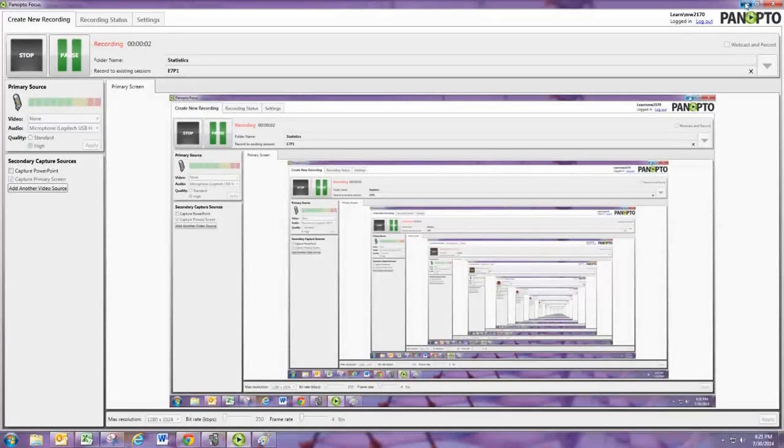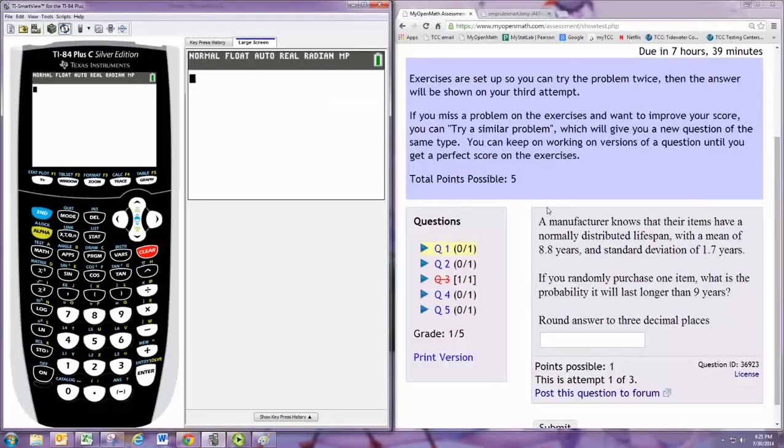In this video, we'll see how to do practice problem 1 from experience 7. A manufacturer knows that their items have a normally distributed lifespan with a mean of 8.8 years and a standard deviation of 1.7 years. If you randomly purchase one item, what is the probability it will last longer than 9 years?